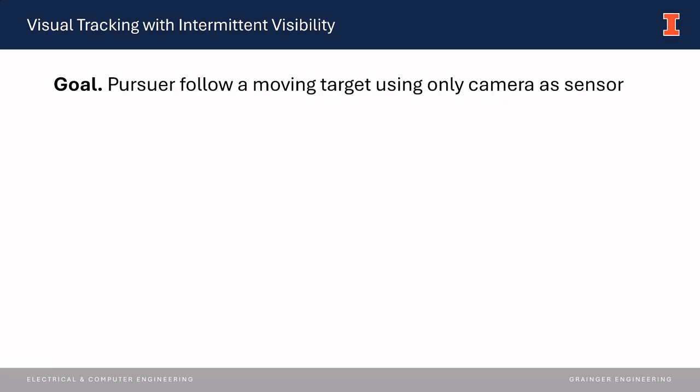The visual tracking task requires the pursuer to follow a moving target using only a camera as sensor. This capability is relevant for search and rescue, delivery, spacecraft docking, in-air refueling, navigation, and many other autonomous missions.